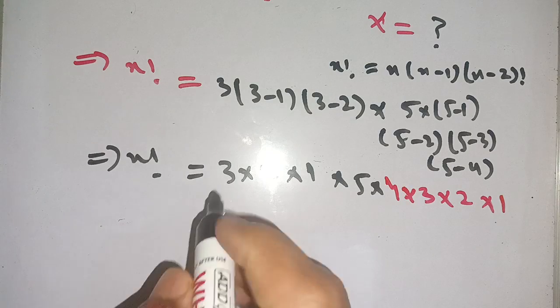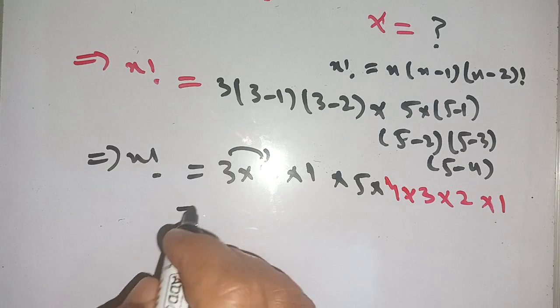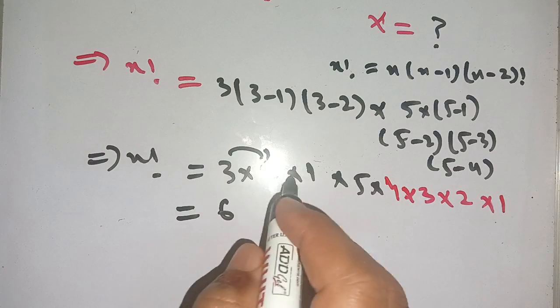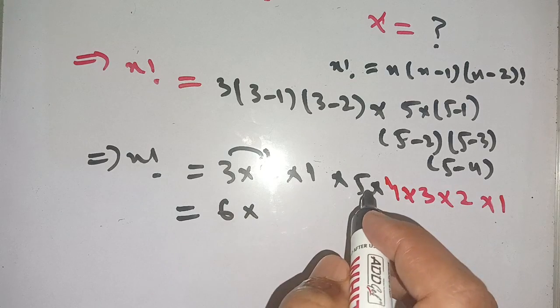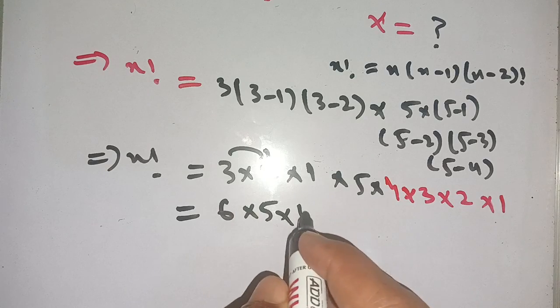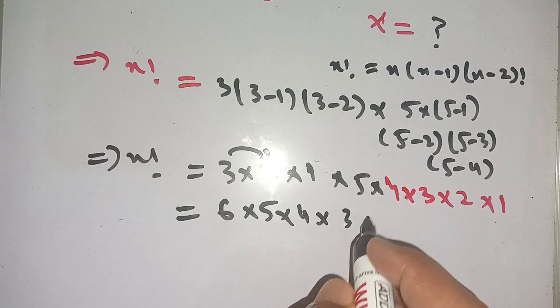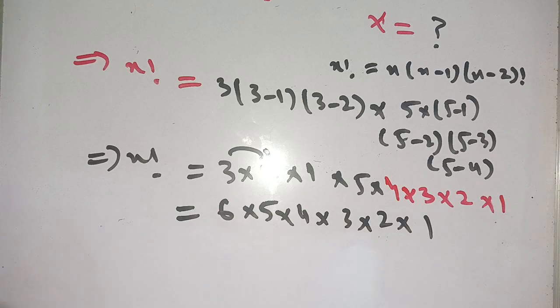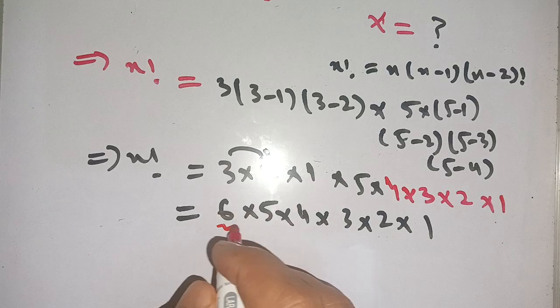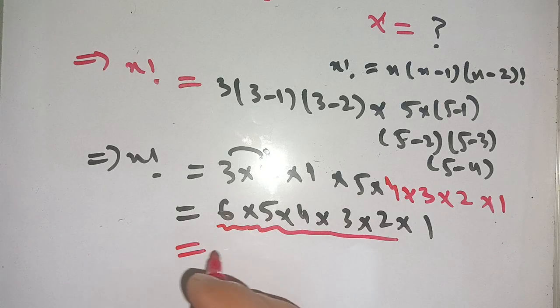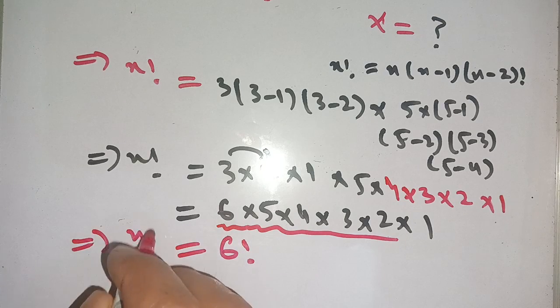We can write this as 3 times 2, it becomes six, times 1, it becomes six, multiplied by 5 times 4 times 3 times 2 times 1. Thus it is in the form of six factorial, which means that x factorial is equal to 6 factorial.